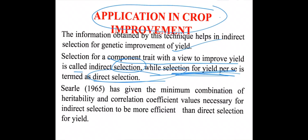Early in 1965, a scientist reported that indirect selection would be more efficient than direct selection for yield. So by using path coefficient analysis in plant breeding, we can select characters which directly or indirectly help in the improvement of yield. Thank you so much — please watch this video lecture and make some notes for exam purposes.